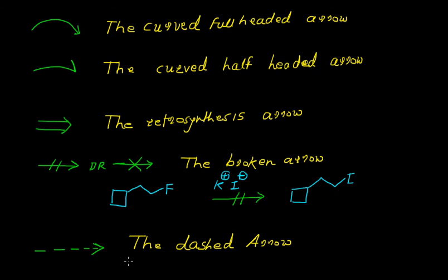And the last arrow is the dashed arrow. This is often used to show the theoretical transformation of the product.